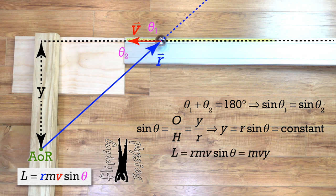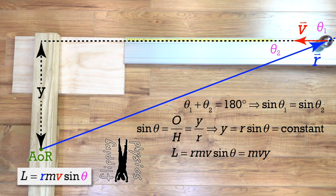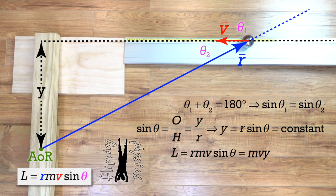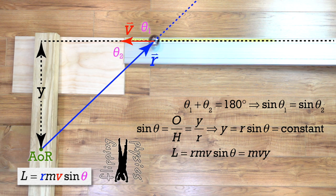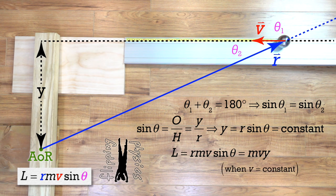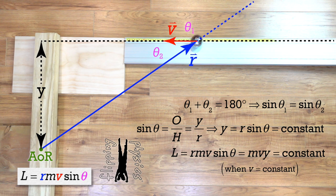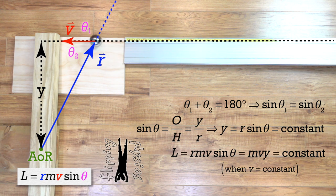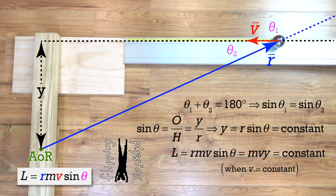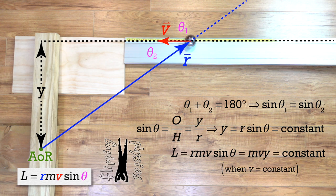Actually, we can plug that back into our angular momentum equation and show that the angular momentum of the point particle as it moves toward the wooden board at a constant velocity also has a constant angular momentum. And it equals mass times velocity times y. Knowing the angular momentum of the point particle is constant makes this much easier.